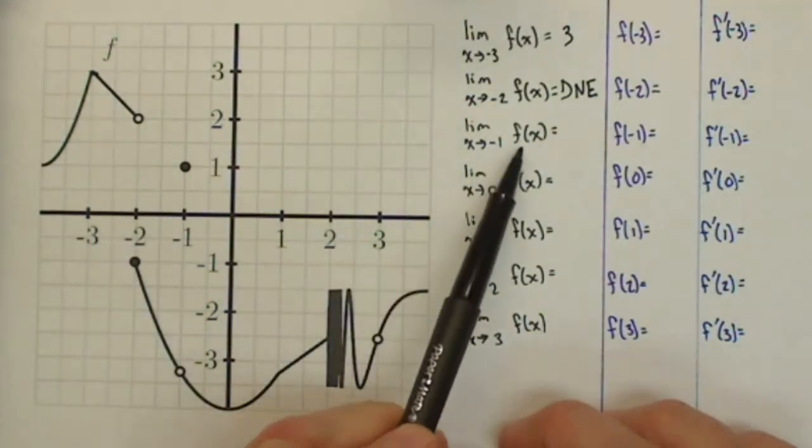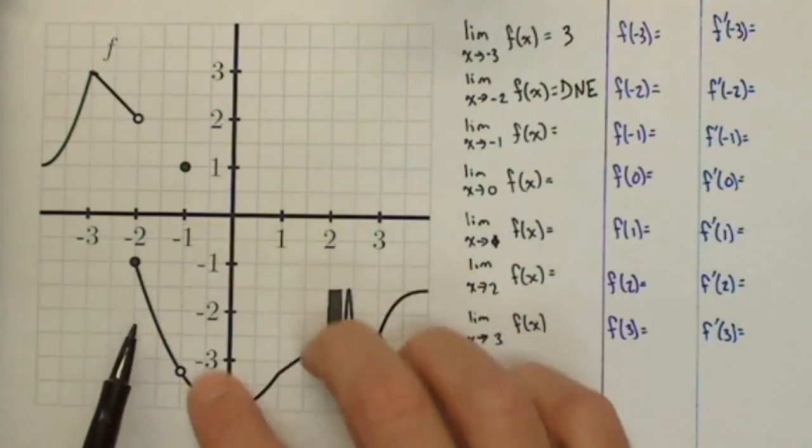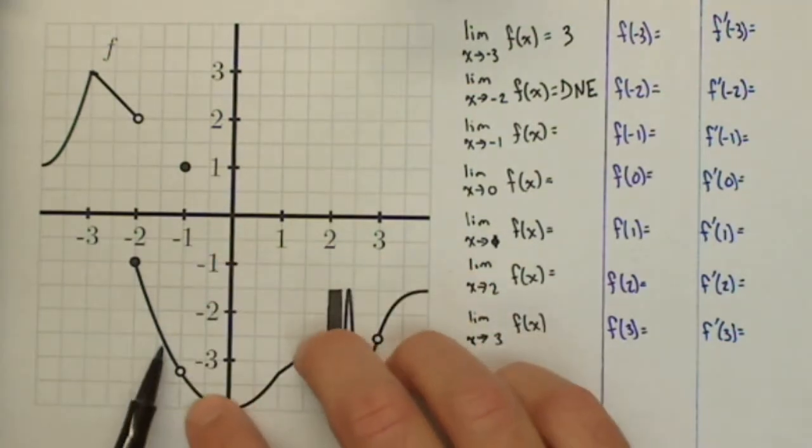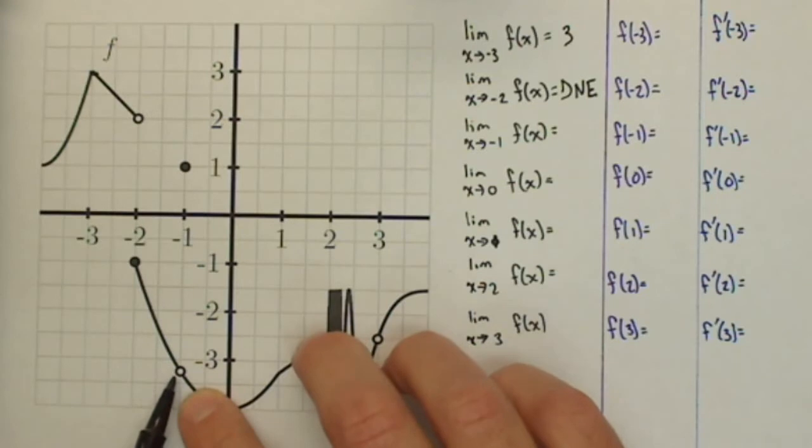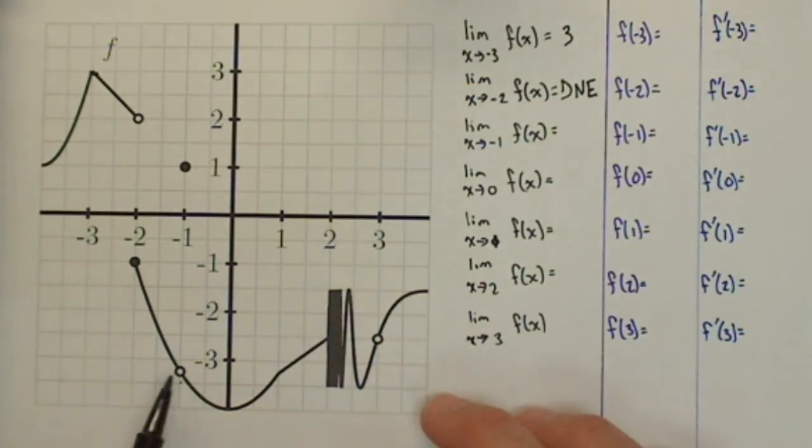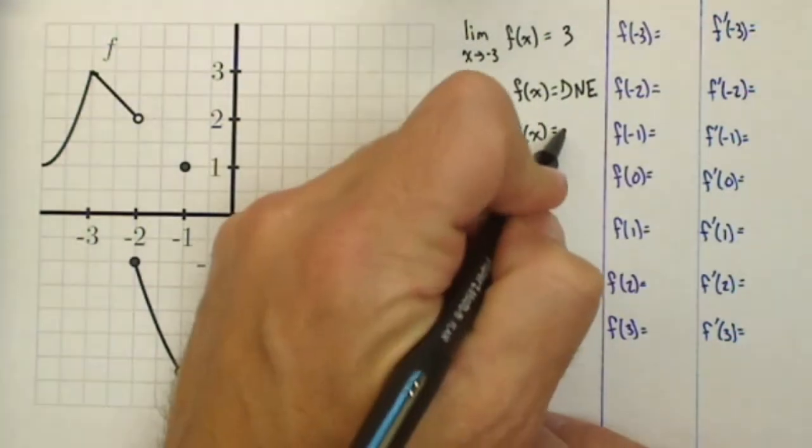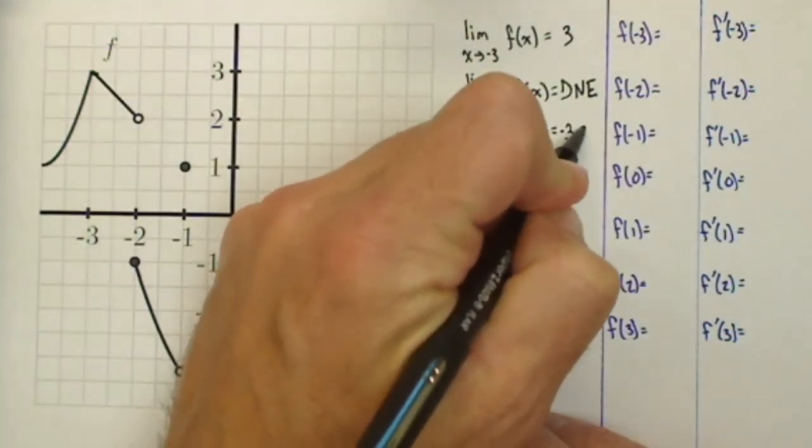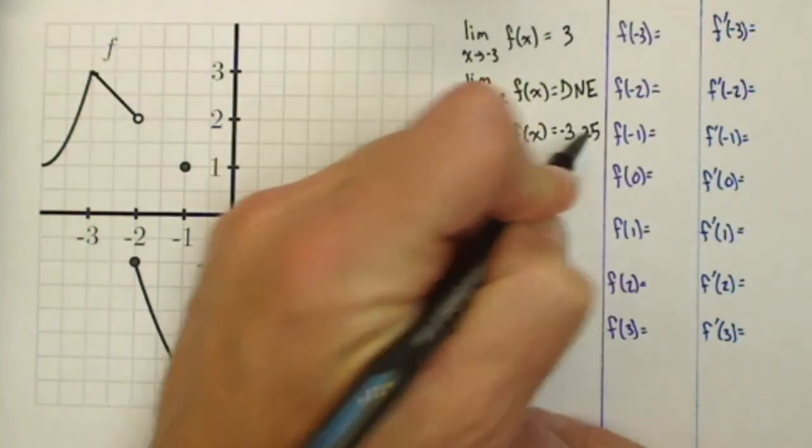The limit as x approaches negative 1 of f of x. Negative 1, if we look here, as we come in from the left and the right, we go to about the same place, which is about negative 3 and a quarter. So looks like it exists, and it's about negative 3 as a decimal, negative 3.25.